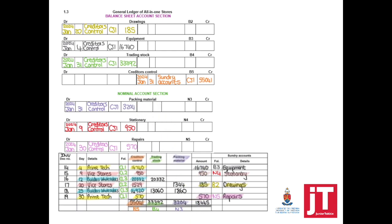If you look at your general ledger: creditors control is credited, and the rest is debited. If you add all the debits, it should equal the credit side — if it doesn't, you've made a mistake. Secondly, the creditors list must equal the creditors control account total. If it's not the same, you've made a mistake posting to individual accounts.